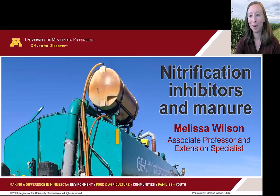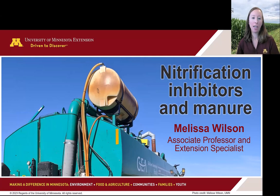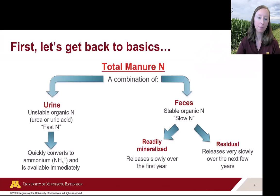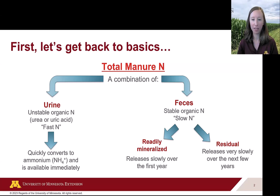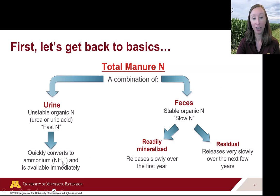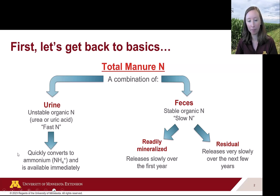Today we're talking about additives in manure, specifically nitrification inhibitors. Going back to the basics: in manure we typically have two forms of nitrogen, coming from the urine and feces components. From urine we get urea or uric acid — this is considered our fast nitrogen. Even though it's an organic form, it quickly converts to ammonium or NH4.